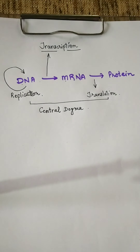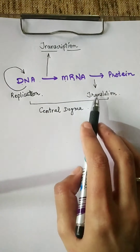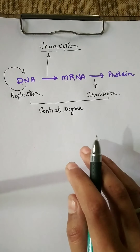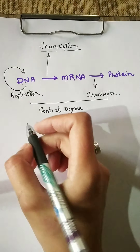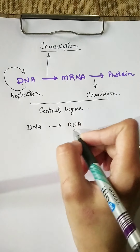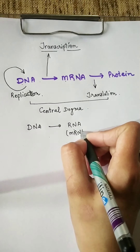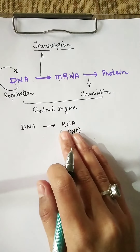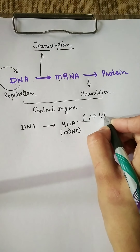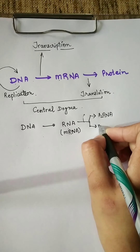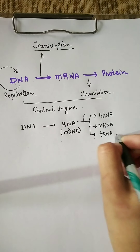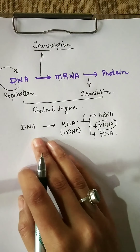Central dogma was given by Francis Crick, and in this central dogma there is replication, transcription, and translation. So what is transcription? Transcription is the formation of mRNA from DNA. There are three types of RNA: rRNA (ribosomal RNA), mRNA (messenger RNA), and tRNA (transfer RNA). The formation of mRNA specifically is what we call transcription.